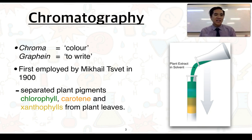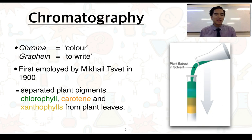This technique was first employed by a scientist by the name of Mikhail Svet in the 1900s. He looked at separating plant pigments occurring from plant leaves.